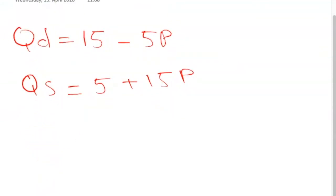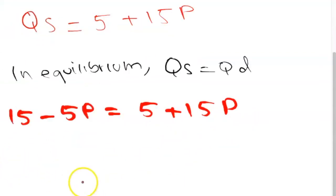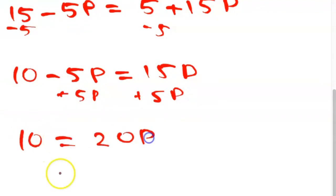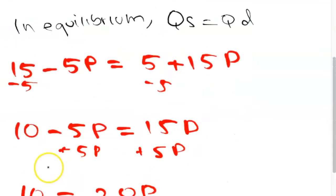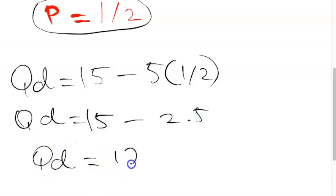Now let's try some Paper 3 questions related to demand and supply functions. If given equations for quantity demanded and quantity supplied, to find the equilibrium price and quantity, set the quantity demanded equation equal to the quantity supplied equation and solve for price. At equilibrium the market clears, so you can then input that price into either equation to find the equilibrium quantity — both equations will give the same result.